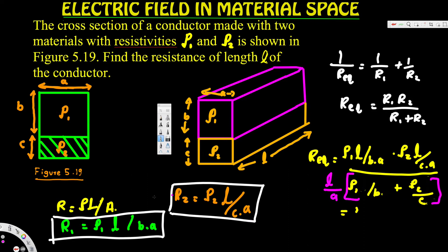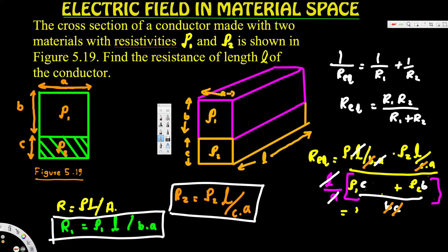Taking l over a common across numerator and denominator, one l and one a cancel. In the denominator, we take bc as the common denominator, so c multiplies the first term and b multiplies the second. The bc terms then cancel with the bc in the numerator, simplifying the expression.